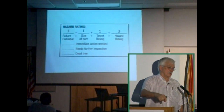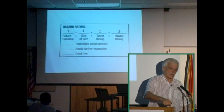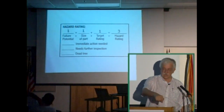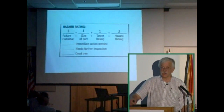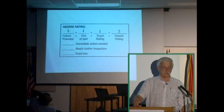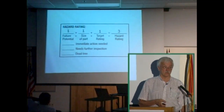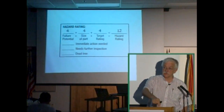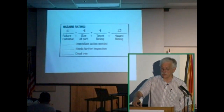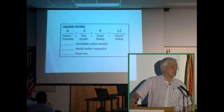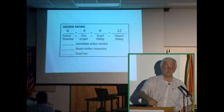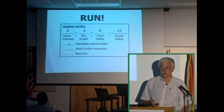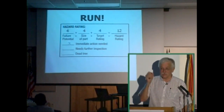So in doing an inspection, if the tree has low failure potential, the part that's going to fail has a very small size, and it's occasional use, you could have a hazard rating of three — a relatively low hazard rating. On the other side of the extreme, you could have a failure potential of four, meaning the tree is going to fall any minute. The size of the part is more than 30 inches, so you give it a four. The target rating is constant use, so you give it a four. What does a 12 signify? It signifies an extreme level of danger.